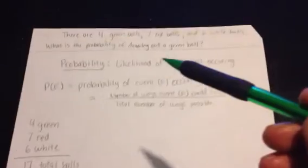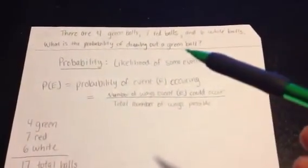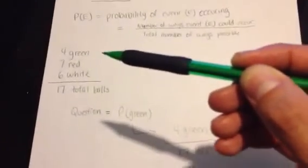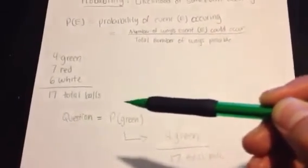And you're asked, what is the probability of drawing out a green ball? Given that you have four total green balls out of 17 in the container as a whole,